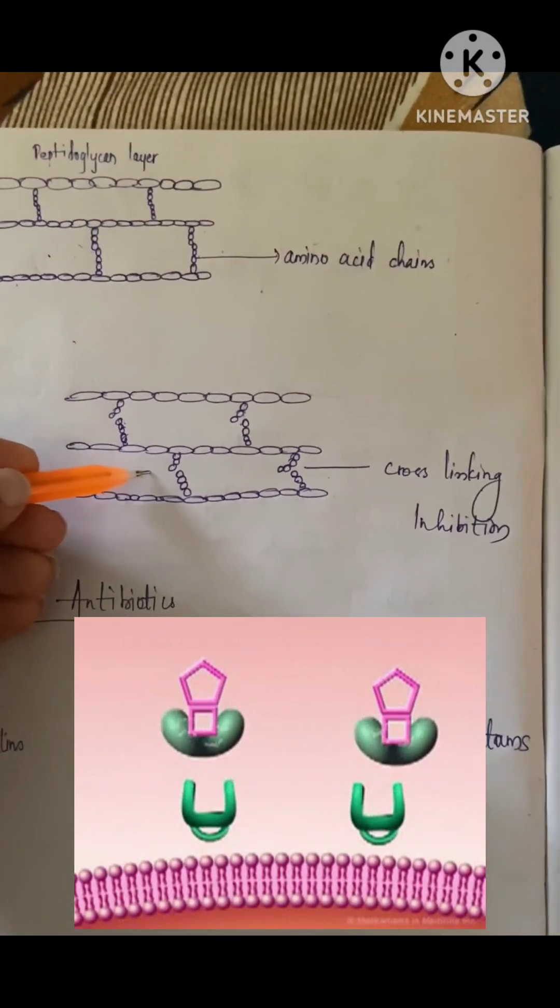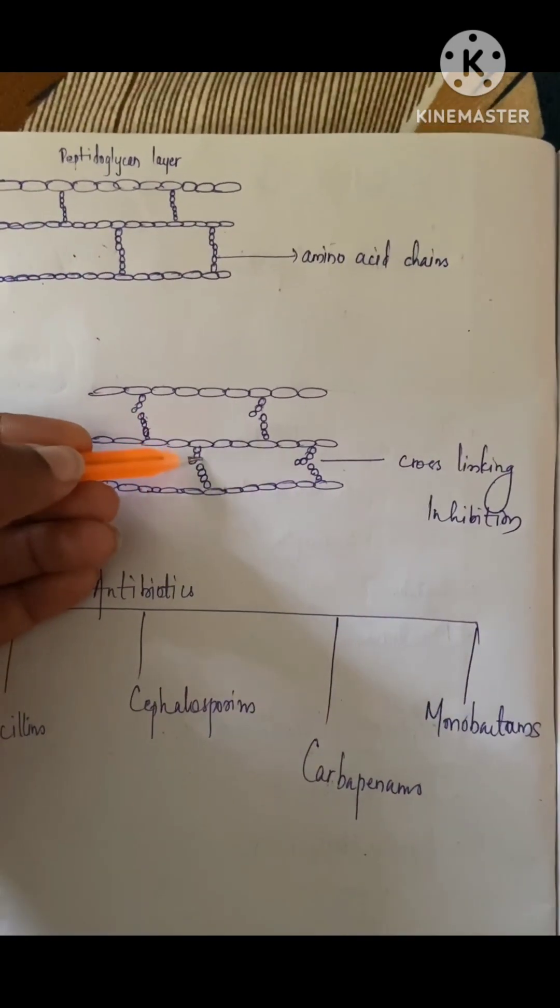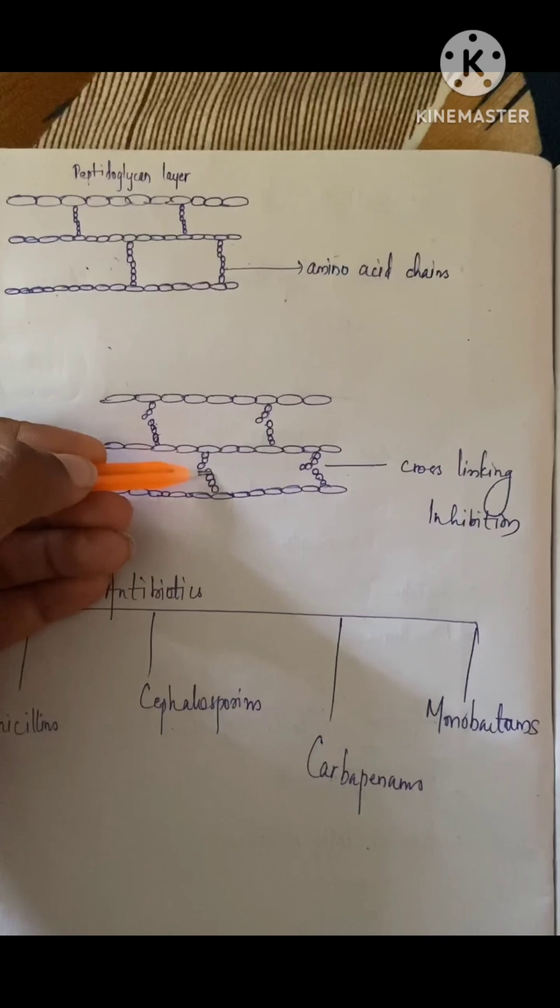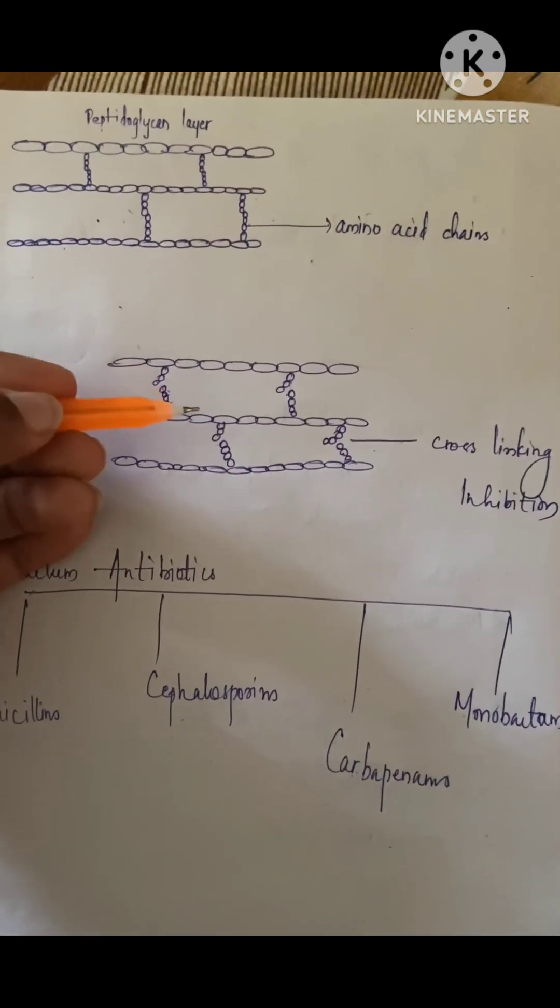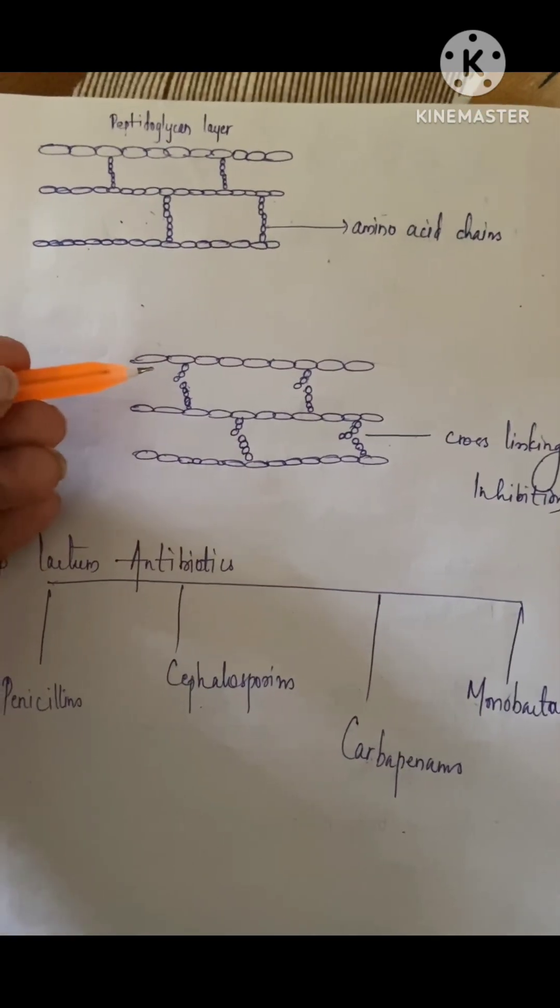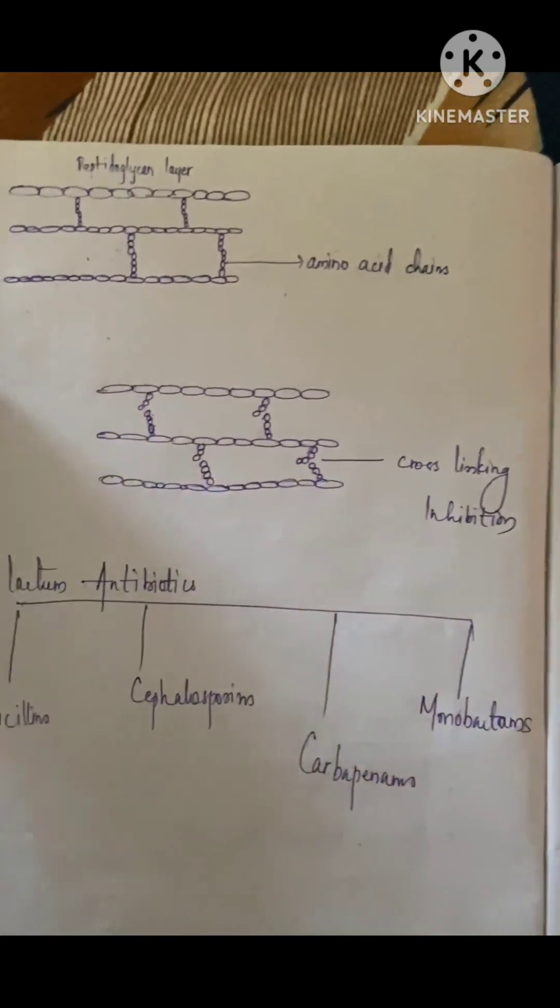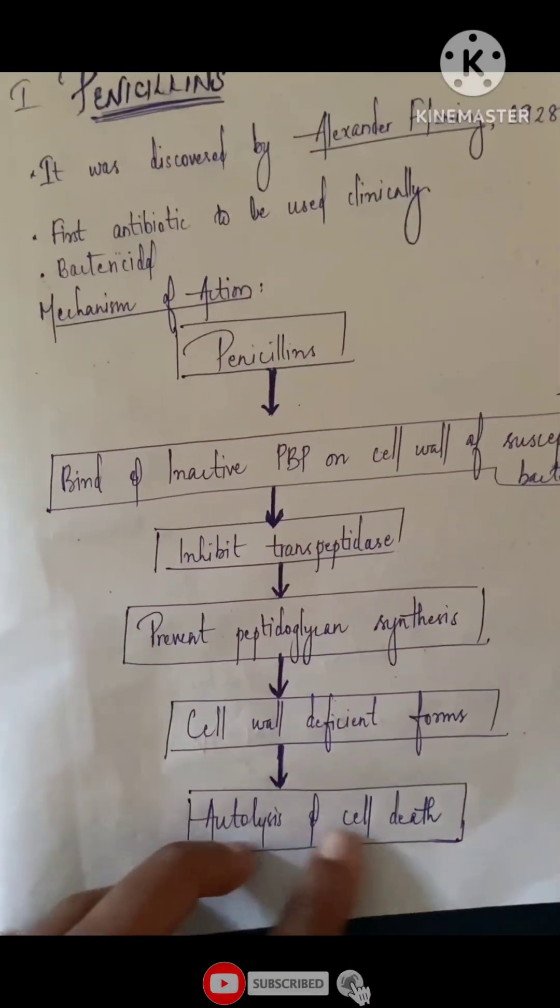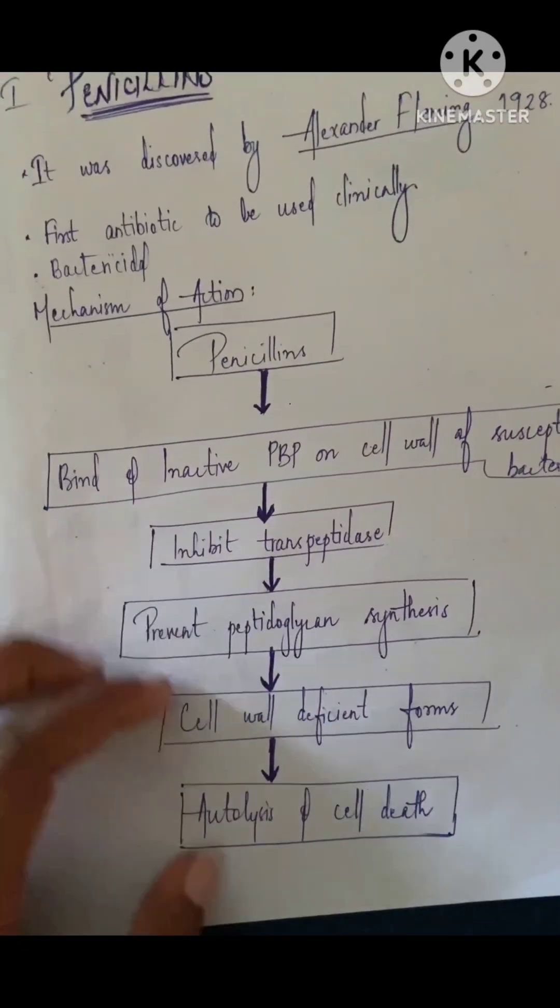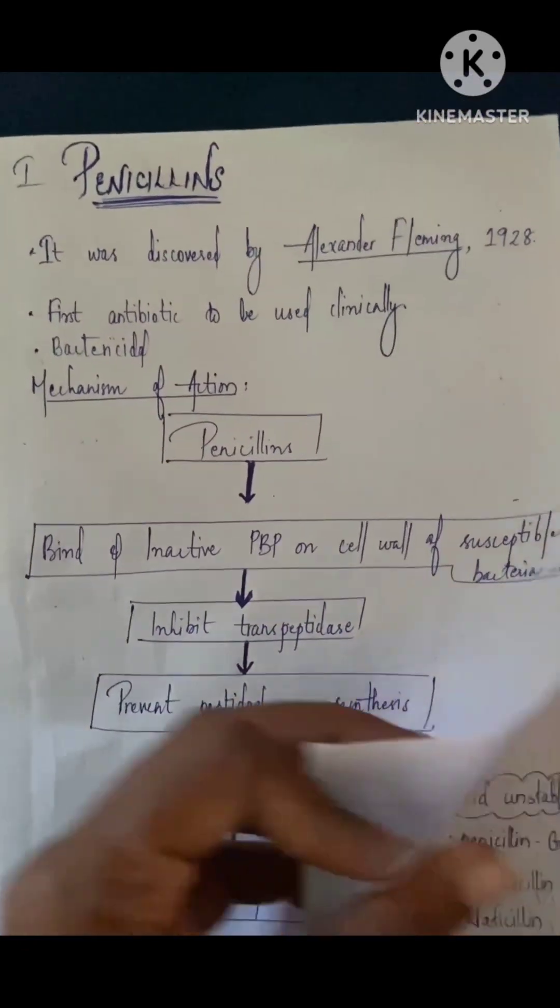This penicillin binds to the amino acid chain and inhibits cross-linking. This causes the peptidoglycan layer to rupture, which ultimately leads to the rupture of the cell wall, causing autolysis and cell death. This is the mechanism of action of penicillin.